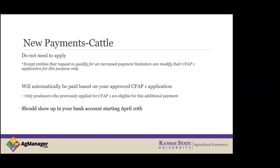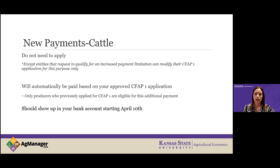Robin asked: if a rancher did not file a CFAP 1 but did do a CFAP 2 and missed the CFAP 1 deadline, is there anything he can do for this round of top-up payments? Todd replied: unfortunately, CFAP 1 is not being reopened. If you did not timely submit the CFAP 1 application previously, you would not be eligible for the top-up payment.